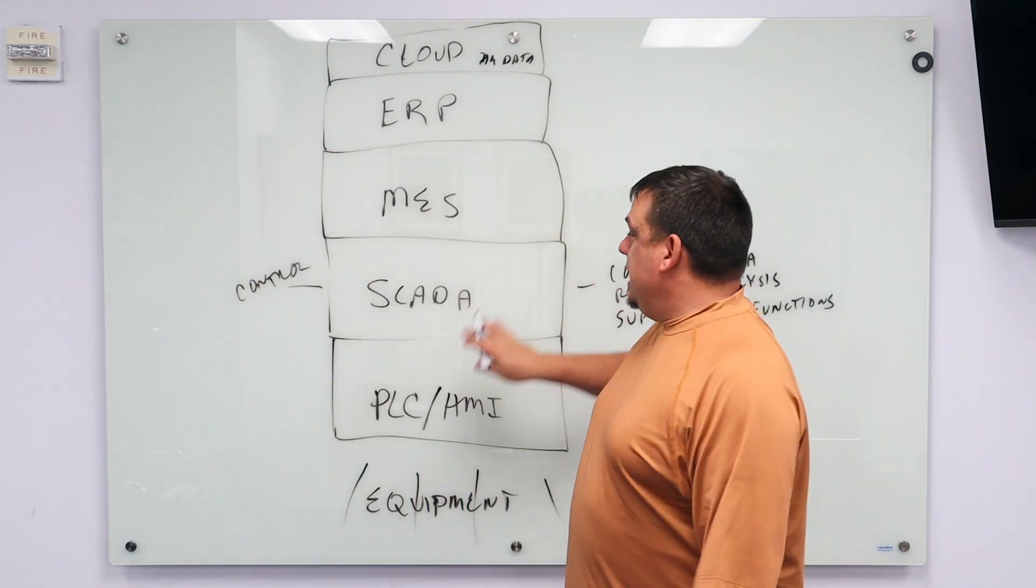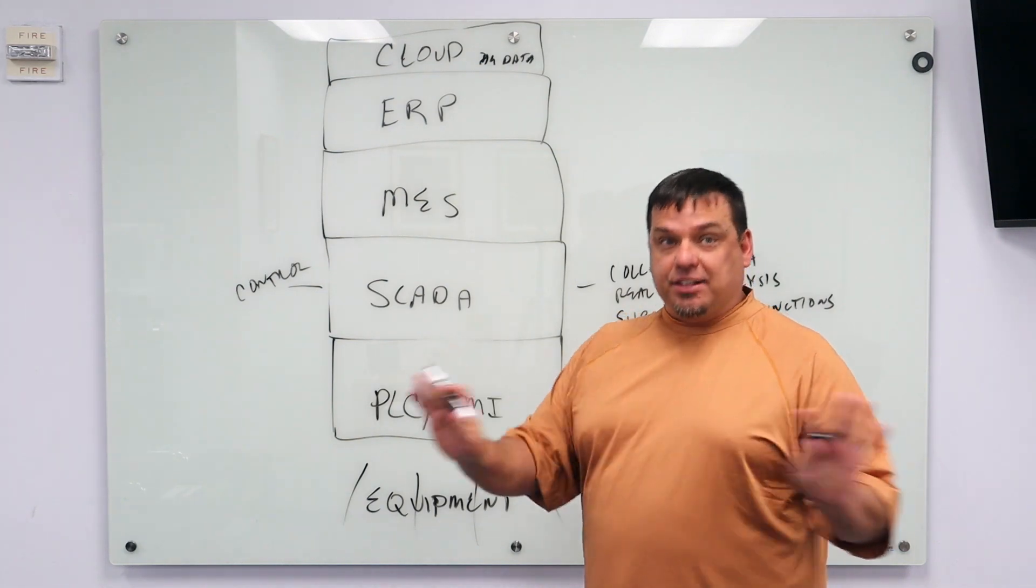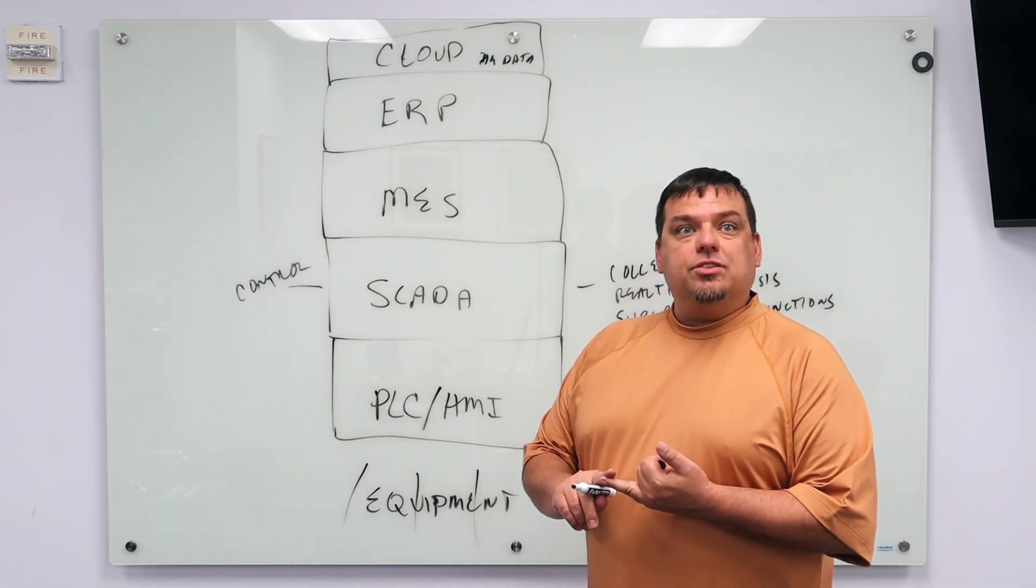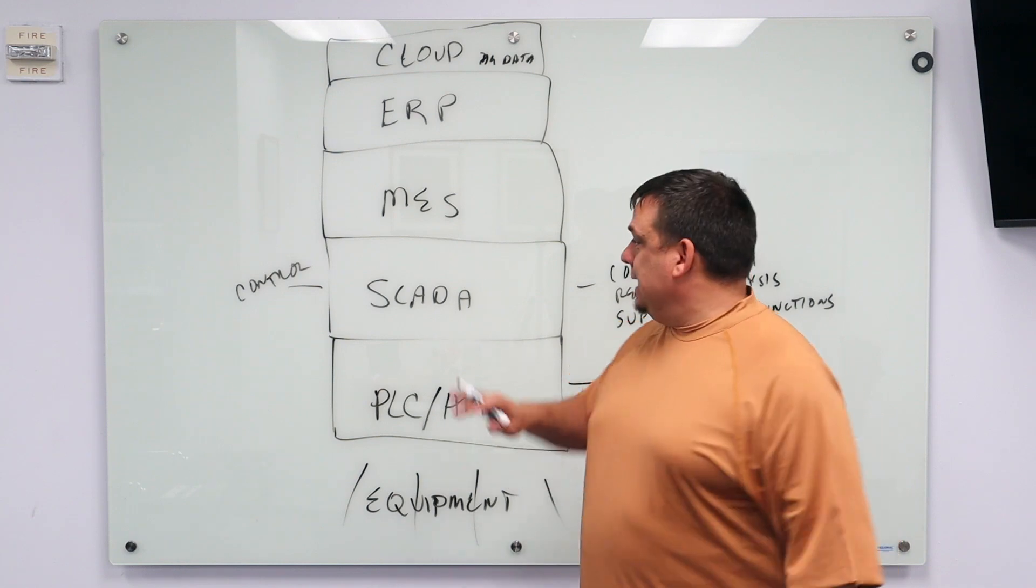The other thing that SCADA is used for is control rooms. Where I have distributed control somewhere, I've got multiple facilities, and I may have a control room running our SCADA system to handle things like incoming alarms, notifications, dispatching, that kind of stuff. That's your SCADA layer.